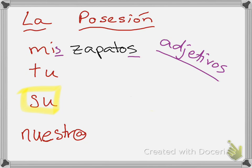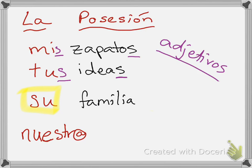Or if I am talking about your ideas — ideas is plural, so 'tu' needs to be plural: 'tus ideas.' If I am talking about their families — familias is plural, so 'su' becomes 'sus.' This is very important: 'sus' would become plural even if I'm saying 'her families.' It doesn't matter if the possessor is plural — it matters if what is possessed is plural.